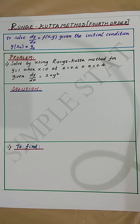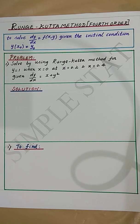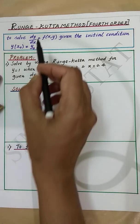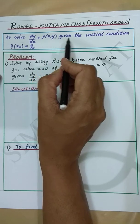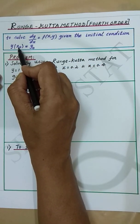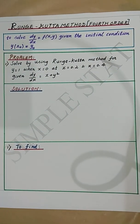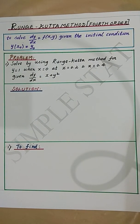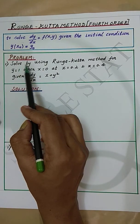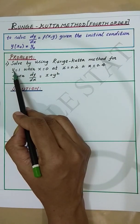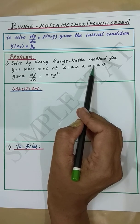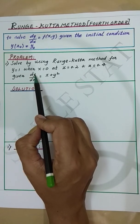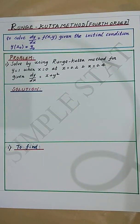Runge-Kutta method of fourth order. Let us use it to solve the first order differential equation dy/dx = f, given the initial condition y = y0. Let's now proceed with the problem: solve using the Runge-Kutta method for y = 1 when x = 0, at x = 0.2 and x = 0.4, given dy/dx = x + y².